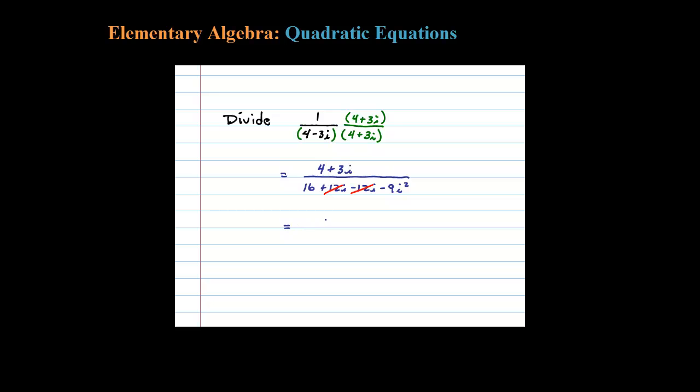And that leaves us with in the denominator 16 minus 9 times i squared. Now I'm going to replace i squared with negative 1.